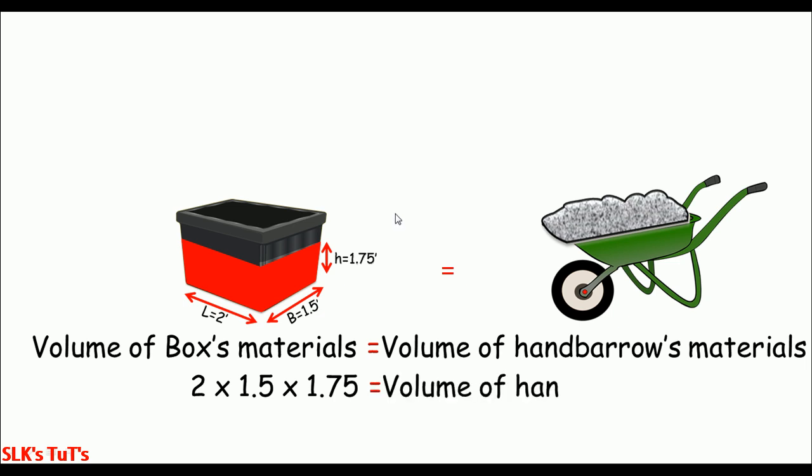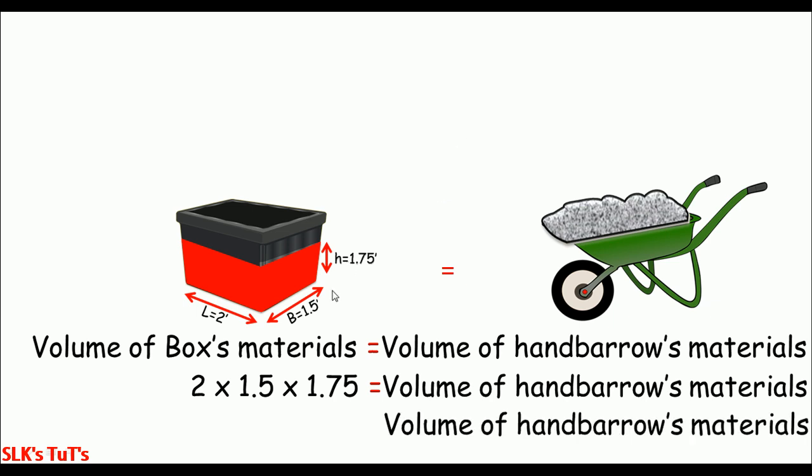Do some math—multiply these three values. You'll get 5.25 cubic feet, which is the volume of box material and the volume of handbarrow's material.